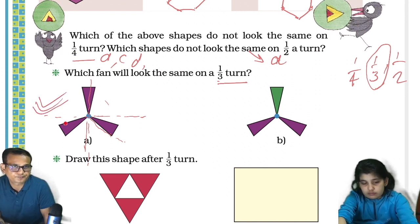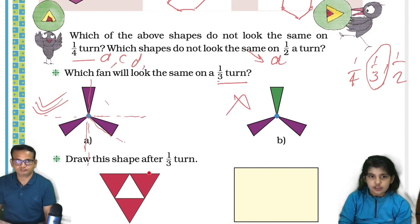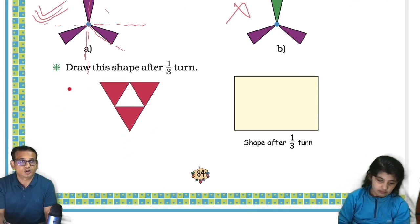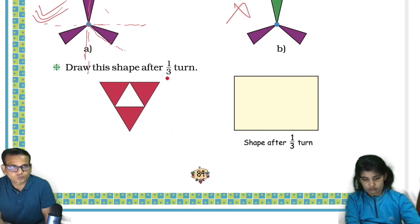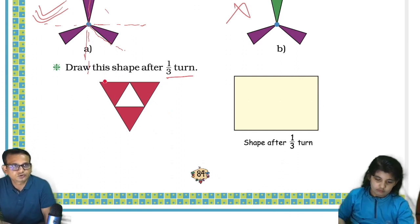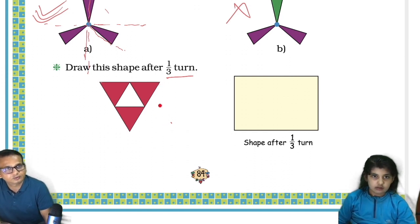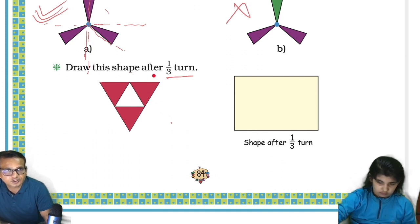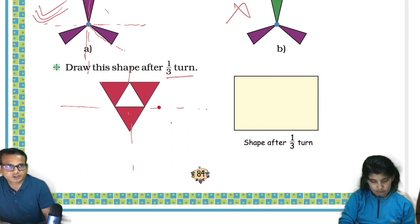But not this one. Let's see — draw the shape after a one-third turn. Okay, so this will come this side. No, that will be half. So this will come this side. No, no — draw the shape after one-third turn. One-third turn means...